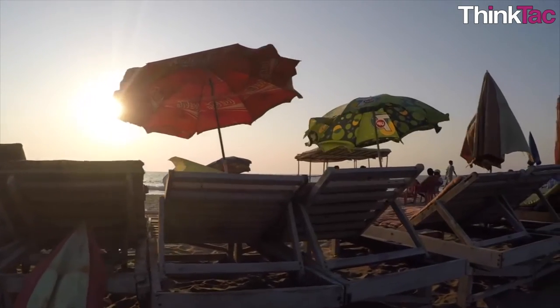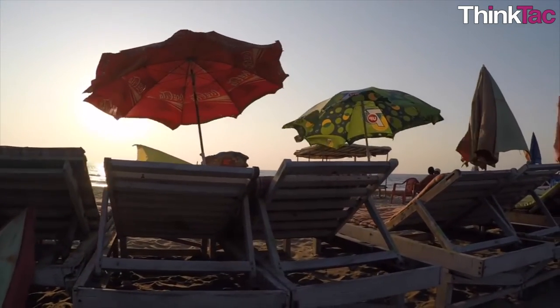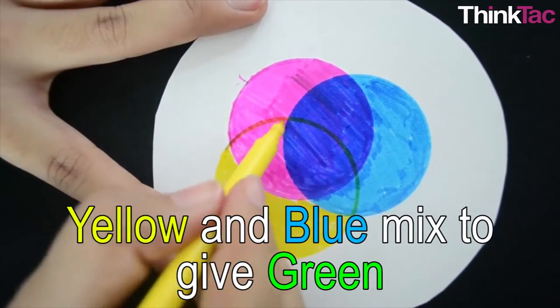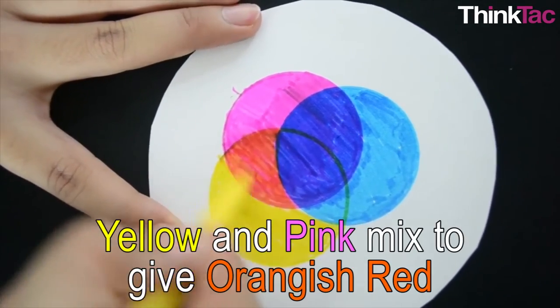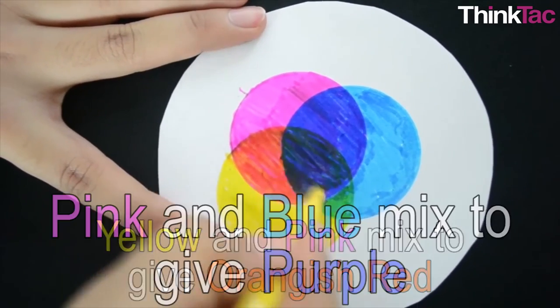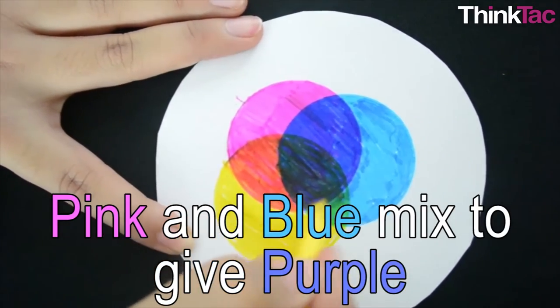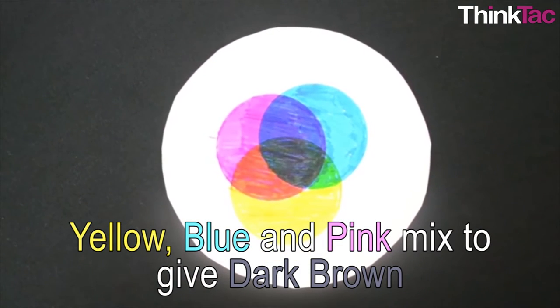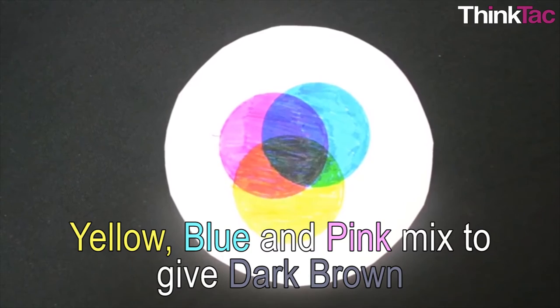After performing this activity, some of your questions might have been answered, or more questions may have been raised. Some things that you must have understood for sure from this experiment were that when yellow and blue mix they make green, when yellow and pink mix they make an orangish red, when pink and blue mix they make purple.